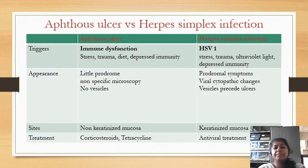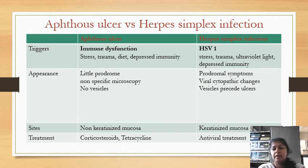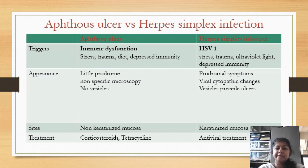Let's see the differences between Aphthous Ulcer and herpes simplex viral infection. In Aphthous Ulcer, the main triggering agents are immune dysfunction — that is, stress, trauma, diet, and depressed immunity. But the main triggering agent in herpes simplex infection is herpes simplex virus type 1, with stress, trauma, ultraviolet exposure, and depressed immunity as other etiologic agents. Herpes ulcerations usually appear with no or little prodromal symptoms. There is no specific microscopic appearance in Aphthous Ulcer, and no vesicles are formed.